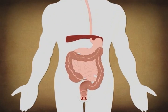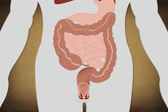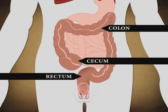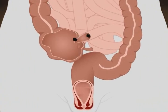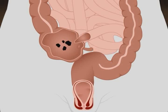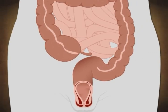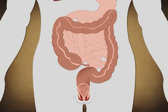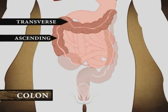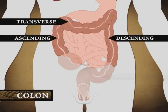The large intestine is a tube about 5 feet long and 2 and a half inches in diameter with four major sections: the cecum, the colon, the rectum, and the anal canal. Material from the small intestine enters the cecum and awaits passage to the colon. The appendix is open to the cecum at one end and closed at the other. It plays no role in the digestive process, but has large masses of lymphoid tissue which may play a role in the immune system. At more than 3 and a half feet, the colon is the longest section of the large intestine. It's made up of four sections: the ascending colon, the transverse colon, the descending colon, and the sigmoid colon.